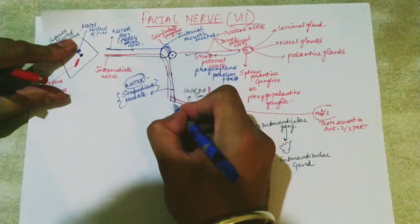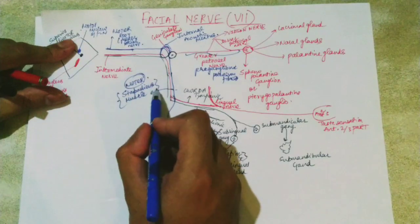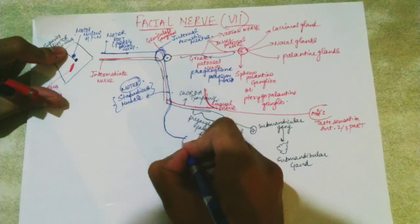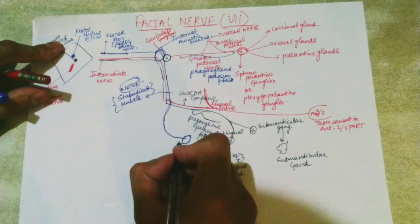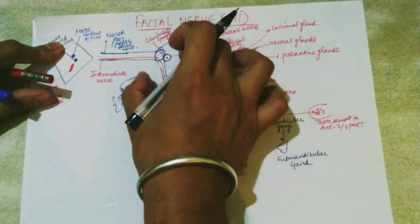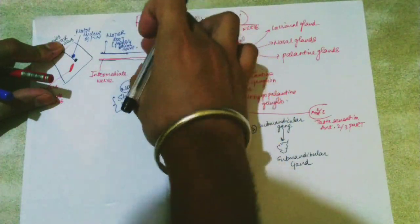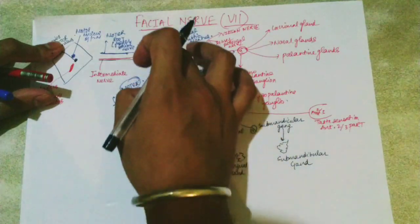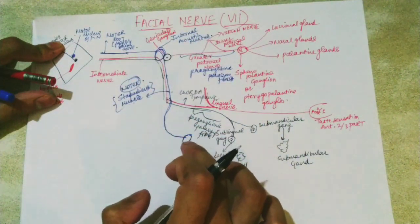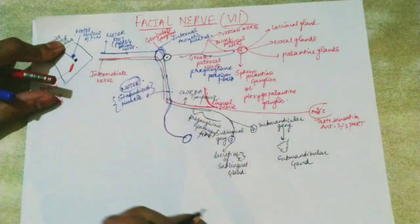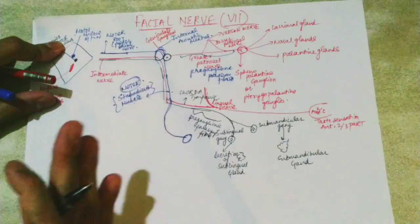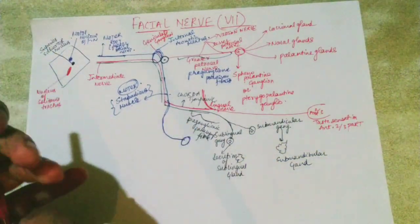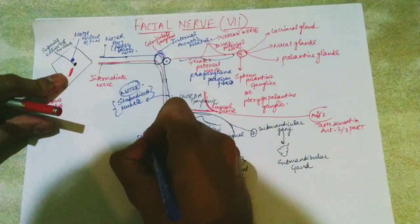The motor root has given its first branch to the stapedius muscle. Now the nerve exits from our stylomastoid foramen, which is present on the temporal bone. This is the exit place from the cranium. We entered at the internal acoustic meatus and are now exiting from the stylomastoid foramen — this entire pathway was the intracranial pathway. After exiting, we enter the extracranial pathway, supplying facial muscles and other muscles.